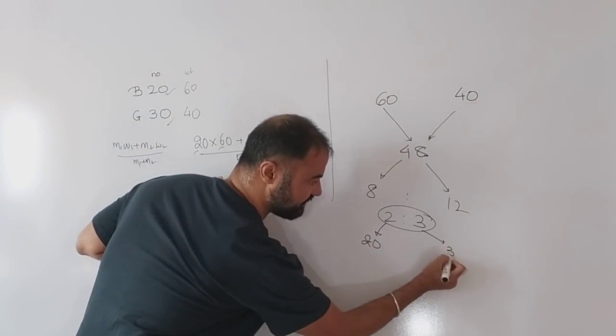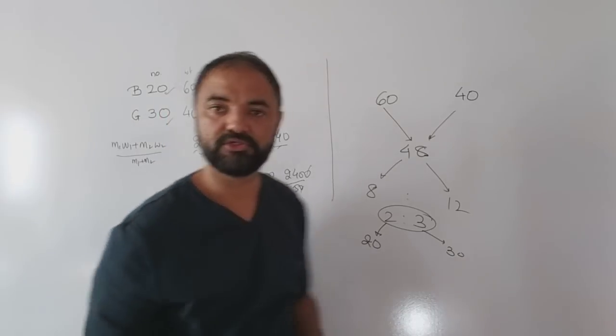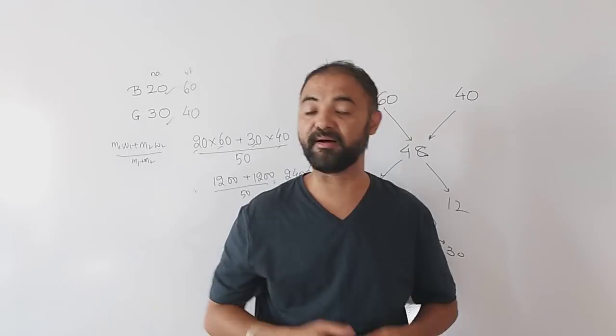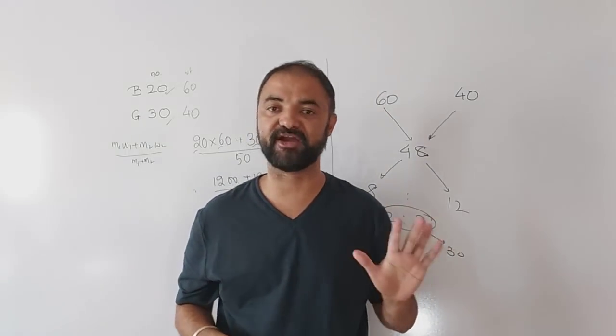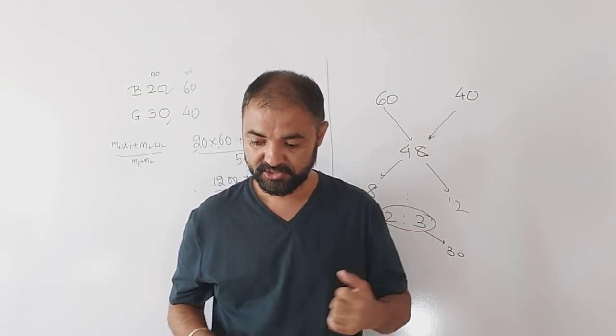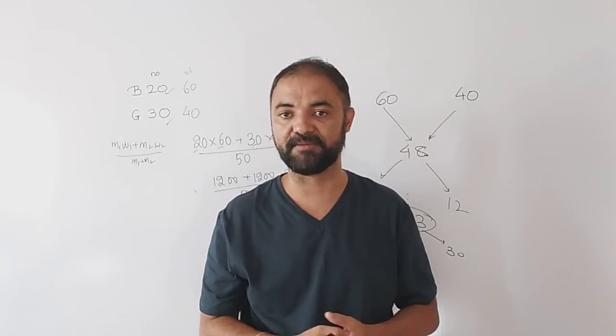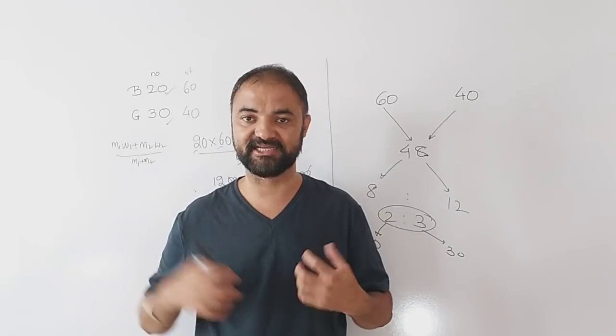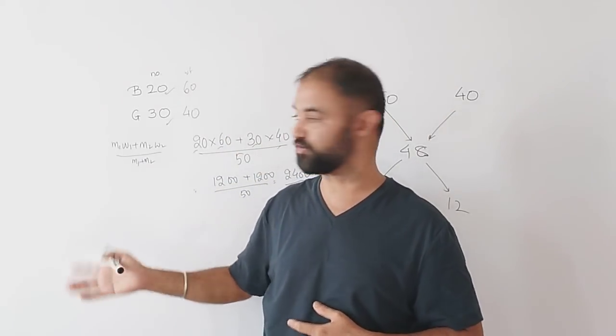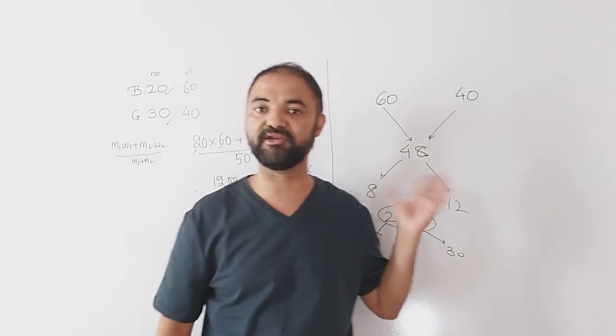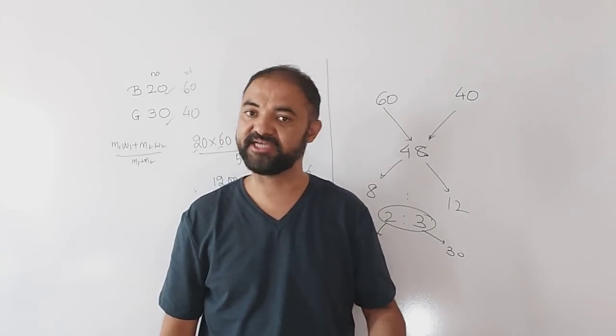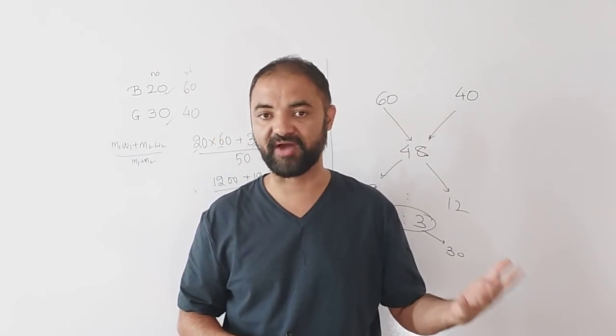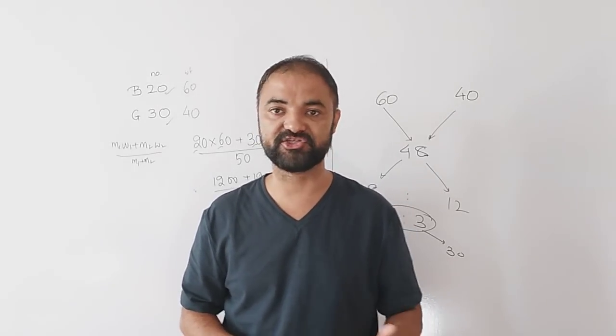The ratio is basically inverse of averages. If you understand averages, mixtures are easy. There are five kinds of questions in mixtures. If we do 3-4 examples of each, we cover mixtures completely. This shortcut will save time and energy and help you understand the topic easily.